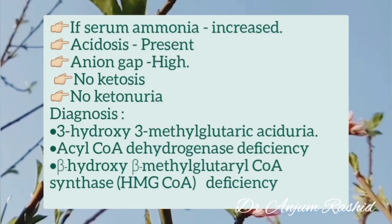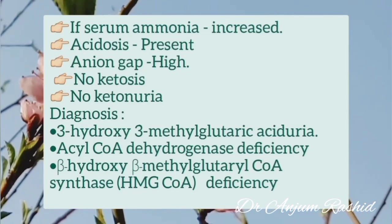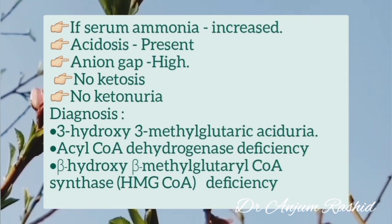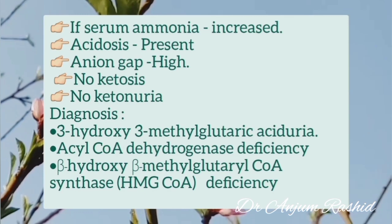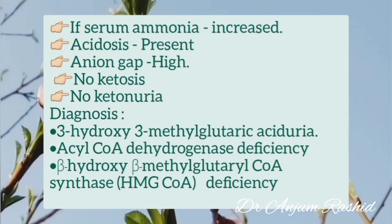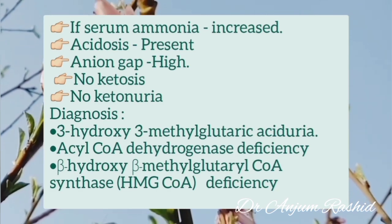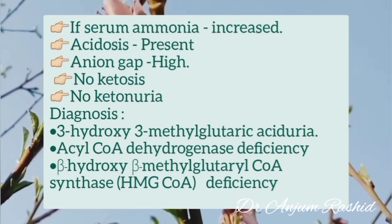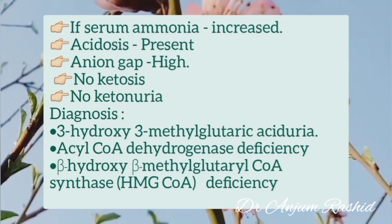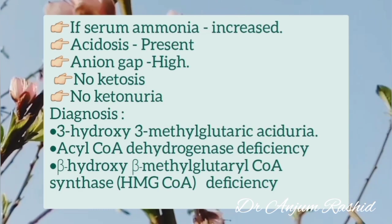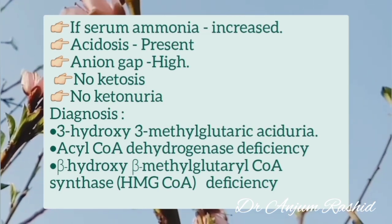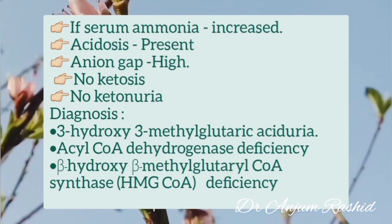If the serum ammonia is increased, arterial blood gases show acidosis, the anion gap is high, but there is no ketosis and no ketonuria, then there could be one of three possibilities: 3-hydroxy-3-methylglutaric aciduria, acyl-coenzyme A dehydrogenase deficiency, or beta-hydroxy-beta-methylglutaryl-coenzyme A (HMG-CoA) synthase deficiency.